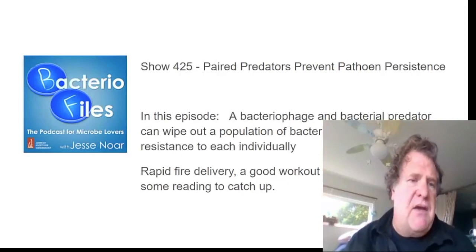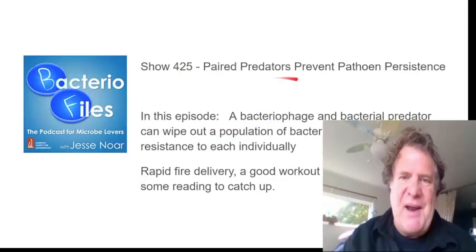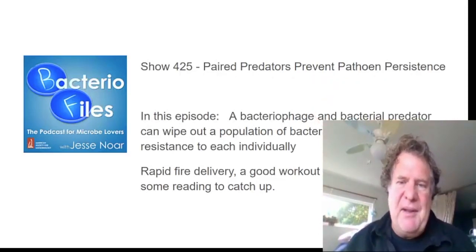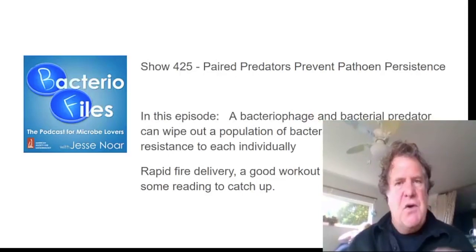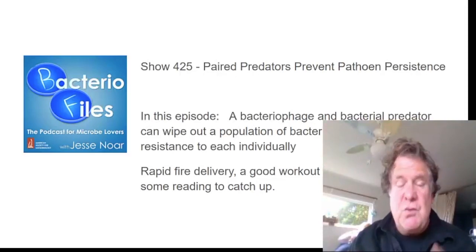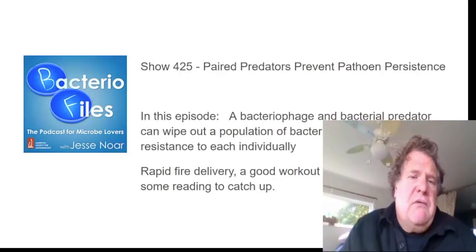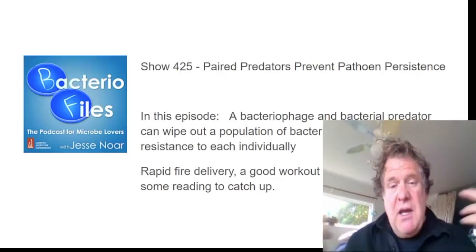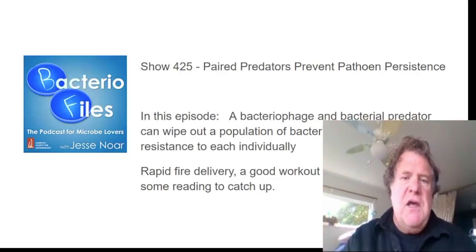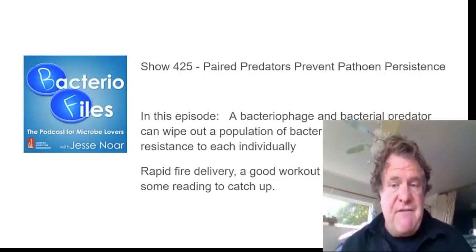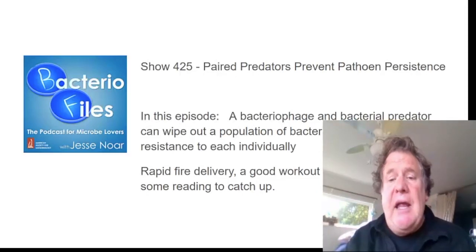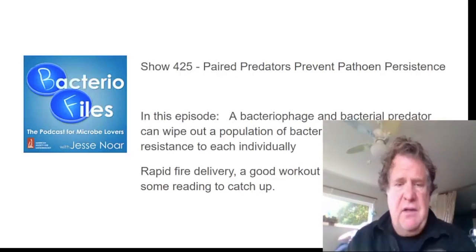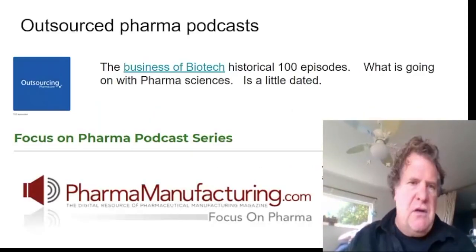This is a different podcast called the Bacterial Files. This episode is titled 'Paired Predators Prevent Pathogen Persistence.' In this episode, a bacteriophage and bacterial predator can wipe out a population of bacteria that could develop resistance to each individually. When we're looking at the development of drug and antibiotic resistance, which is a really big problem, what we want to do is develop a new drug — a magic bullet — to kill the bacteria. But the trouble is bacteria are smart and they become resistant. So what they're exploring is using bacteriophage, which are viruses that infect bacteria, alongside a bacterial predator. The host is Jesse Noir, who has a rapid-fire delivery and talks really fast.